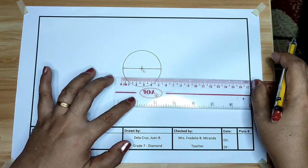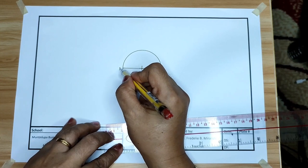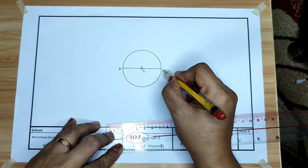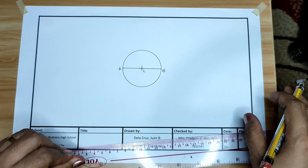Let us name this line A, B. Did you follow?